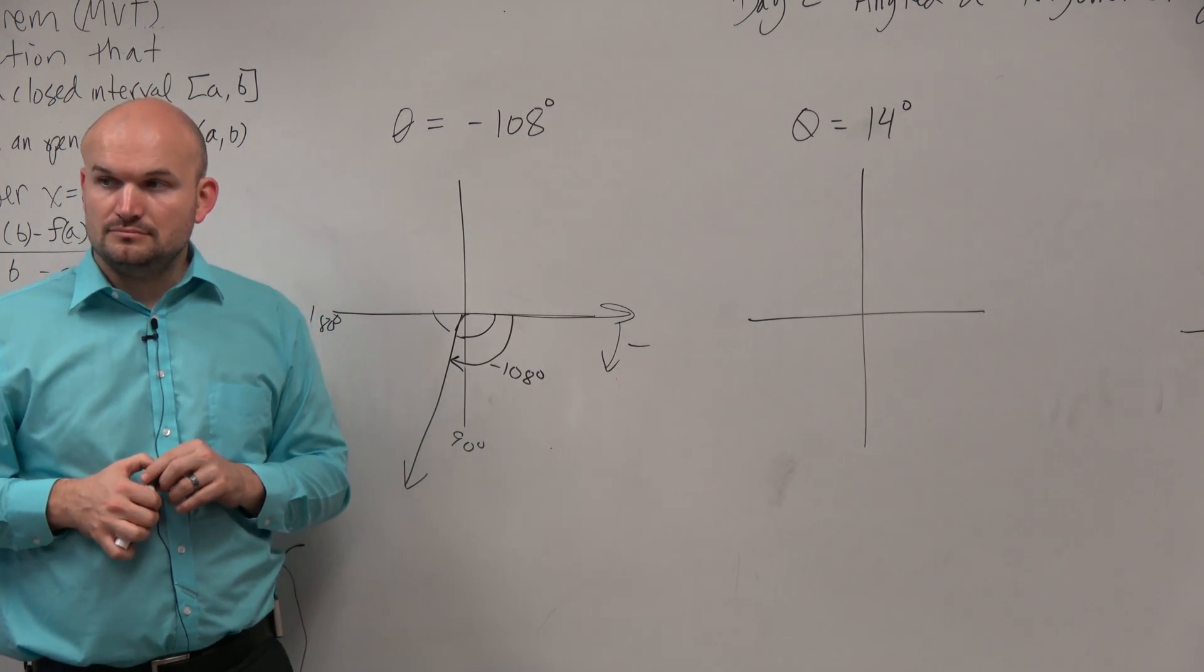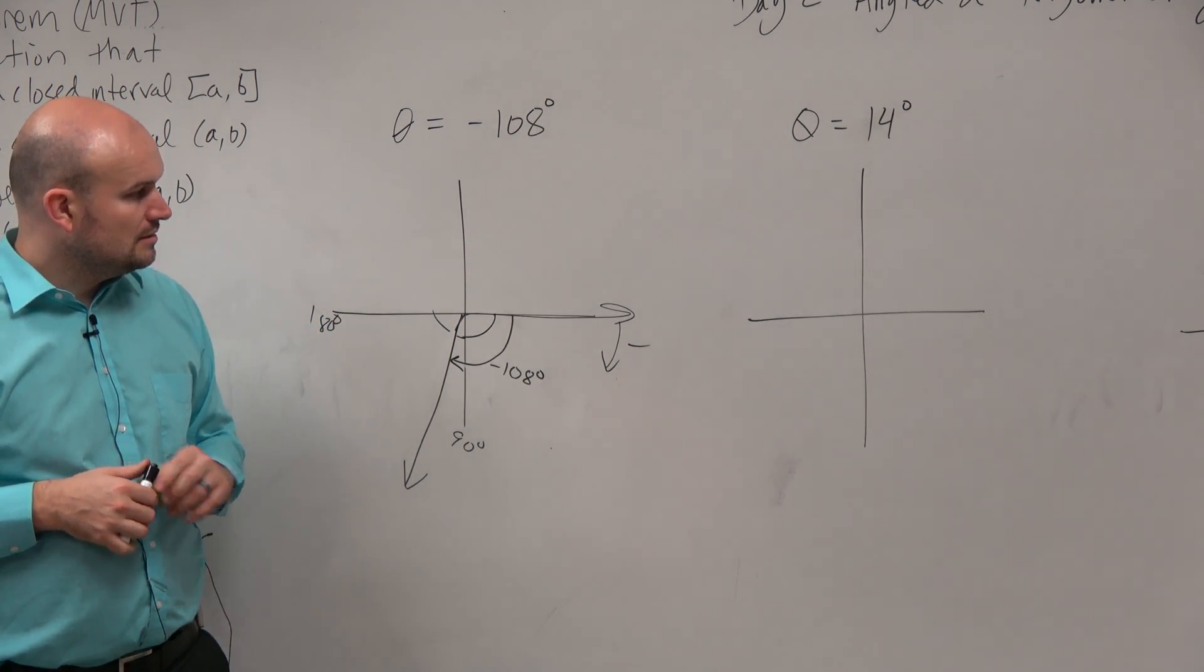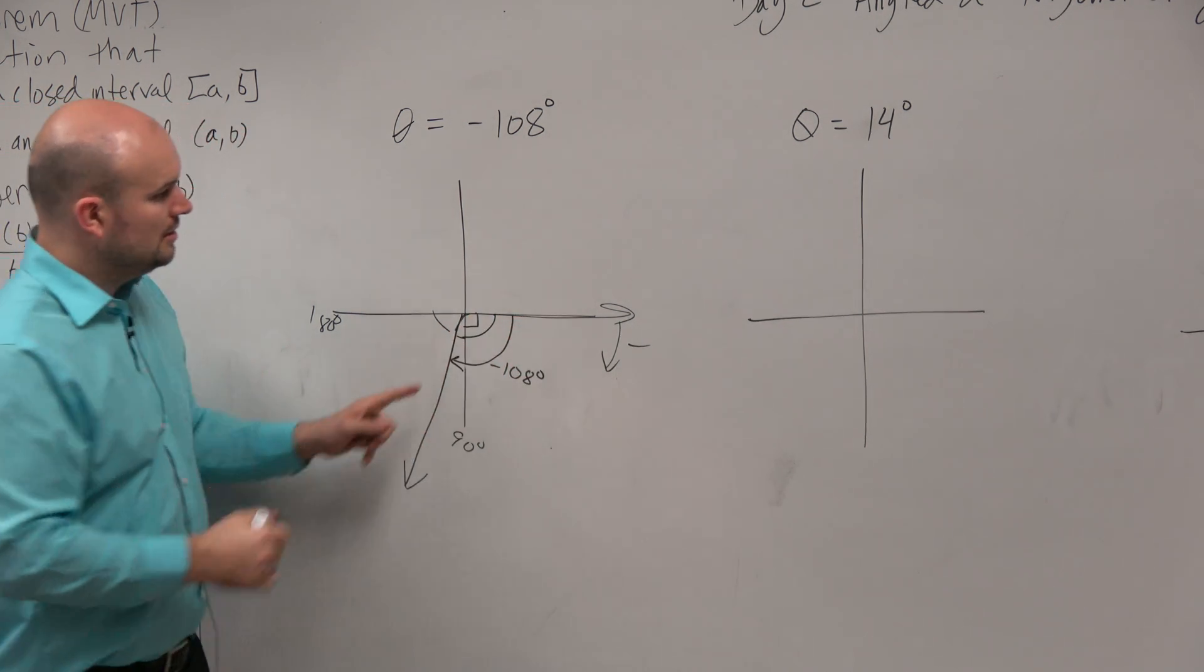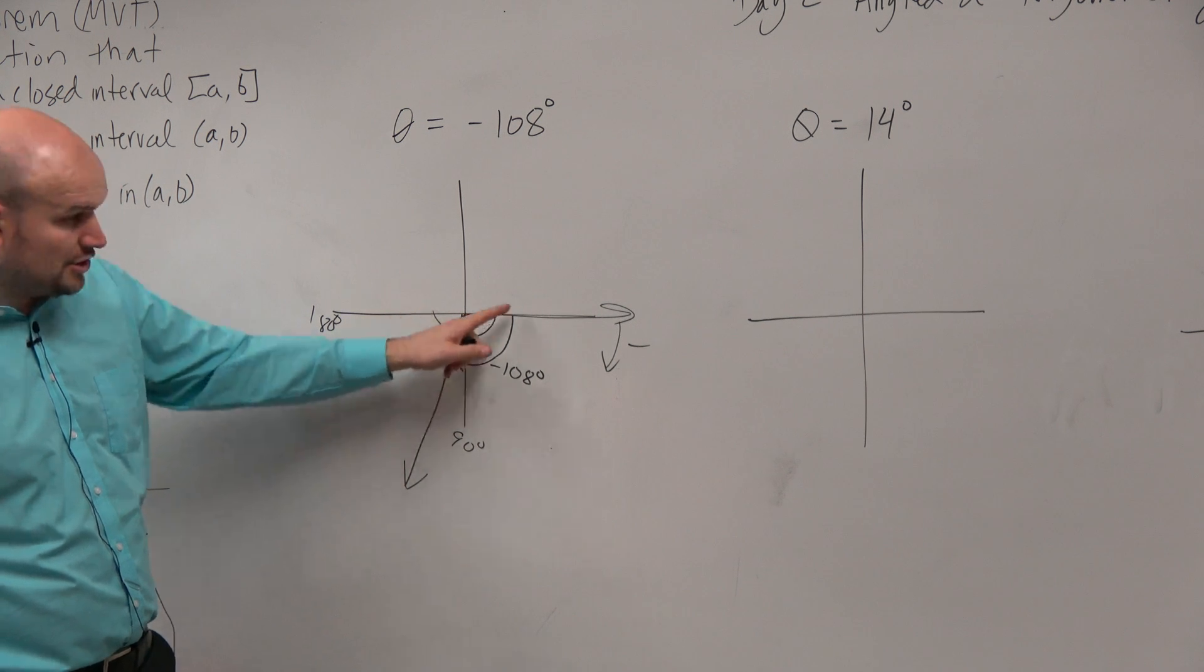I thought 180 was up and down, and 270 or something. Measurement from here to here is 90 degrees. That's a right angle. Yeah. Measurement from here to here is a straight angle. That's 180 degrees.